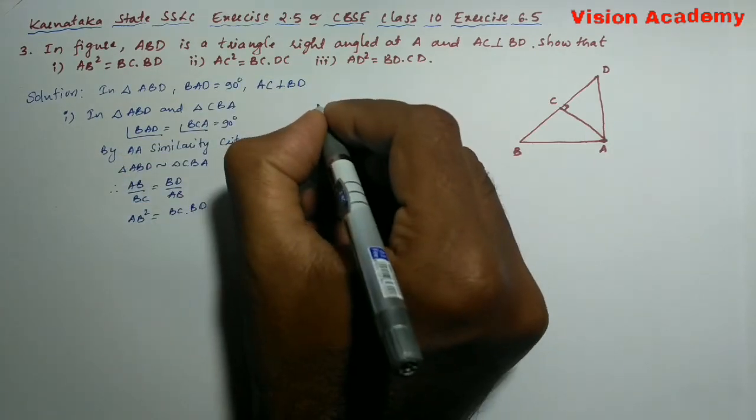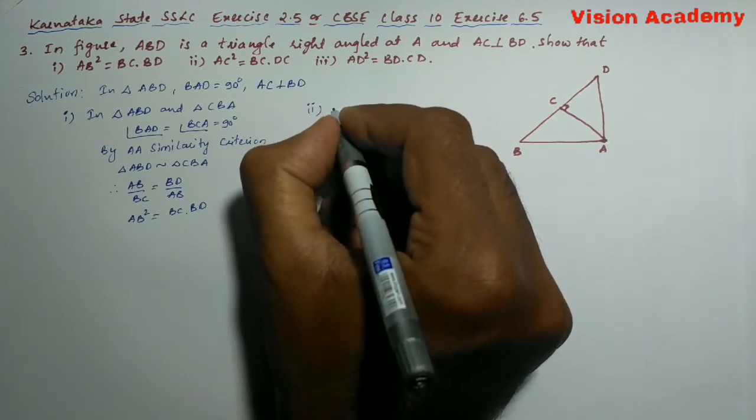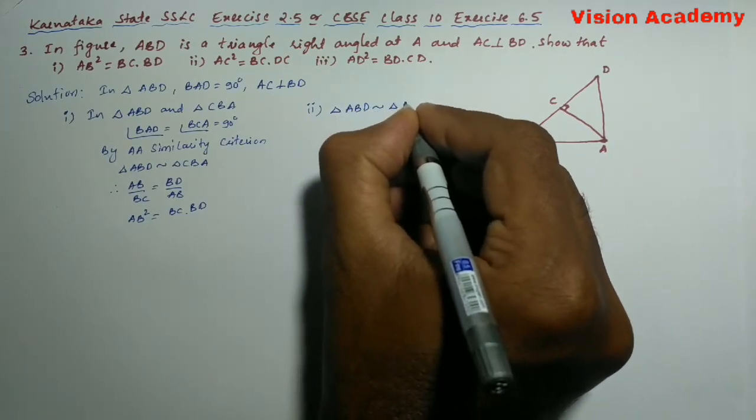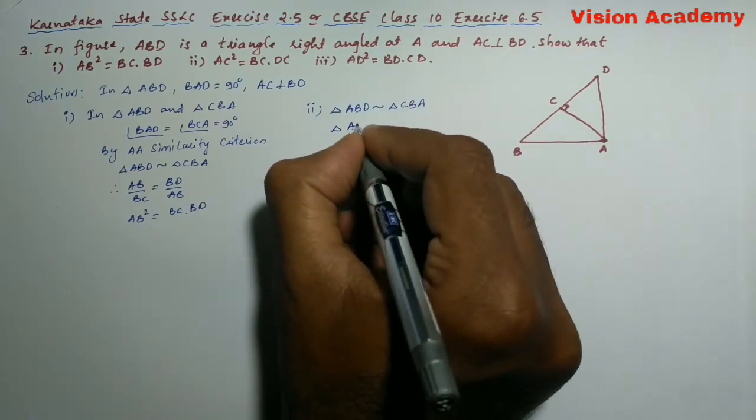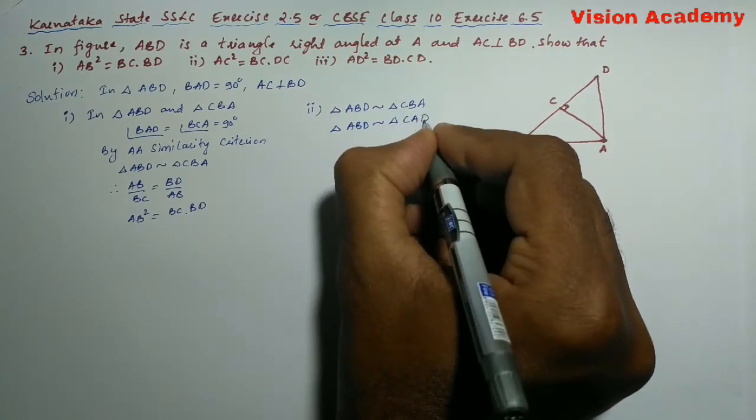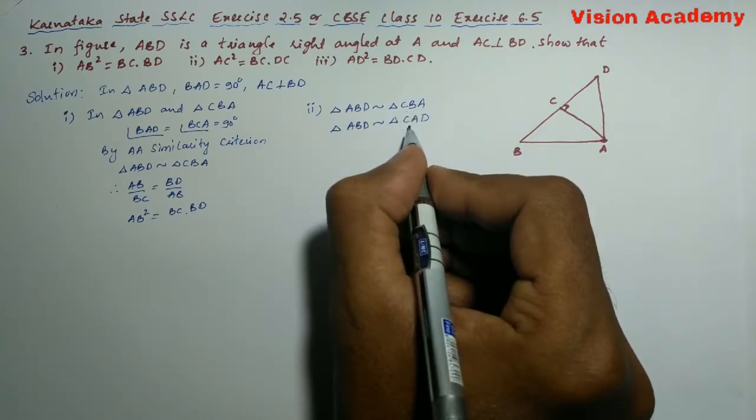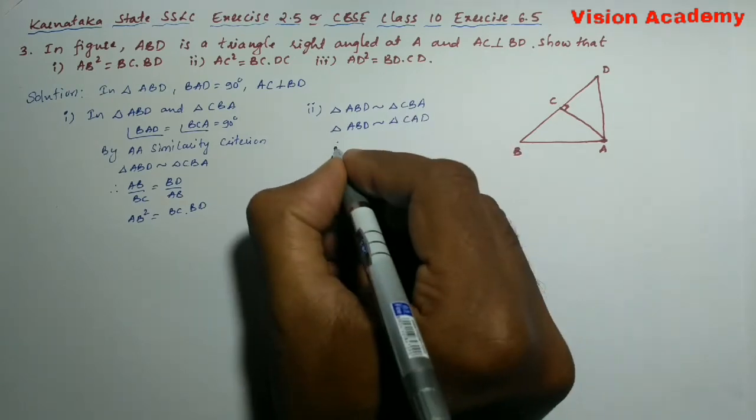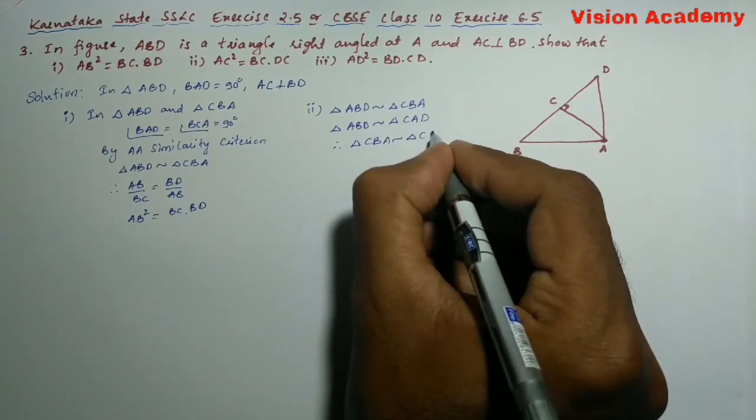Here we will write the second question. Triangle ABD is similar to triangle CBA. Triangle ABD is similar to triangle CAD. Once ABD is similar to CBA, then both of these two triangles are similar. So therefore, triangle CBA is similar to triangle CAD.